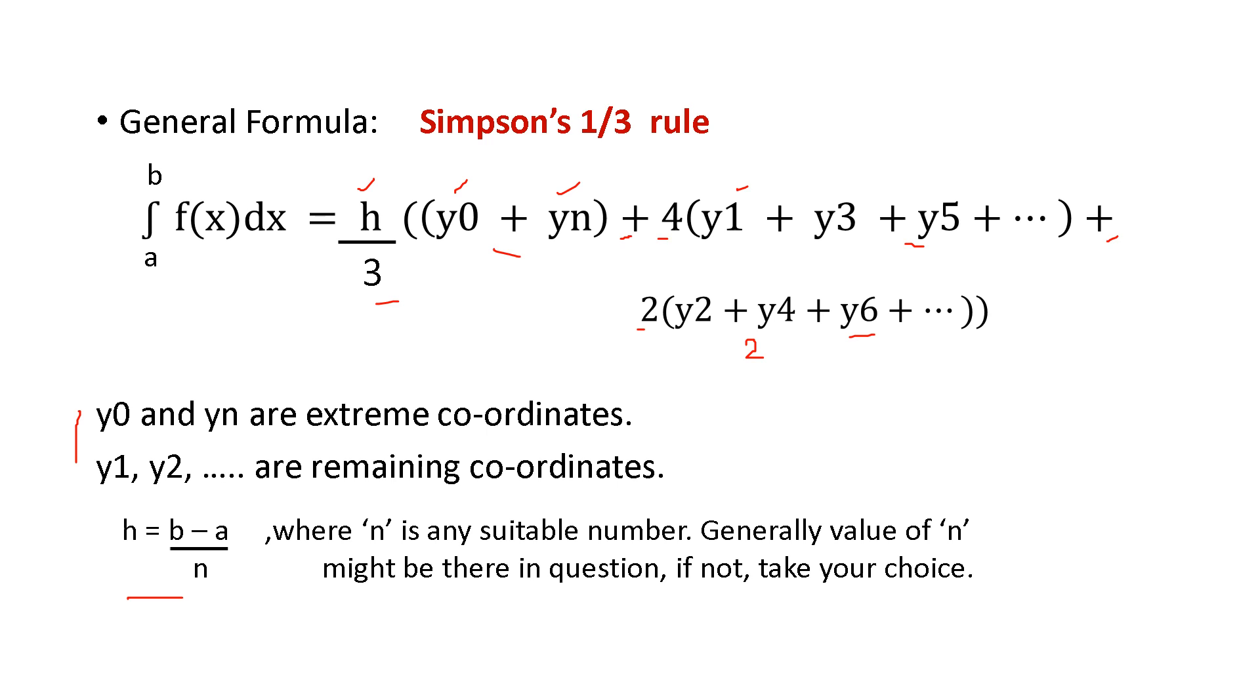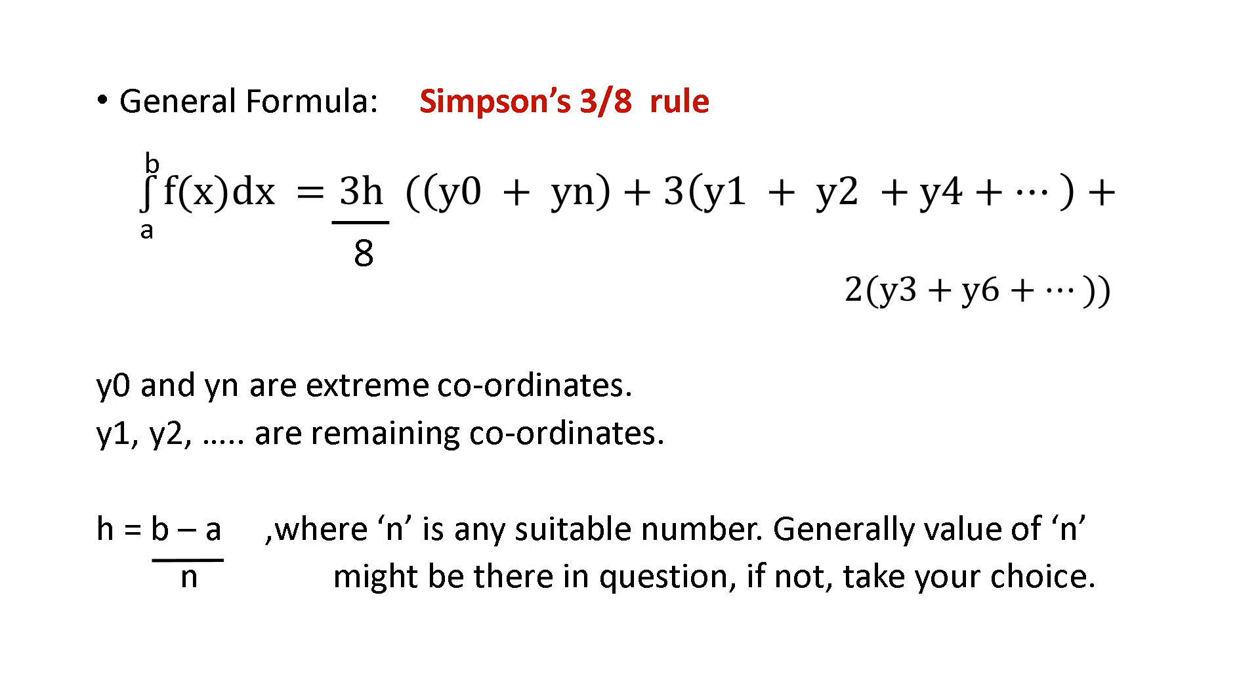B and a are the integration range. That is a to b. So, b minus a by n. N is a suitable number. And normally it is given in the question. If it is not given, you have to take the value on your choice. That is h, h is equal to b minus a by n.